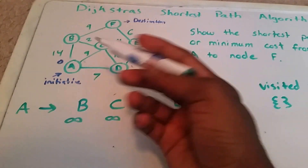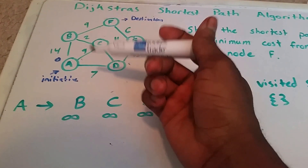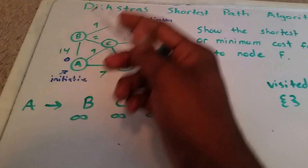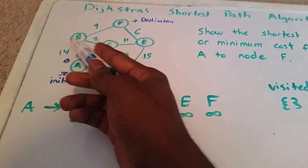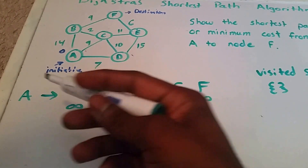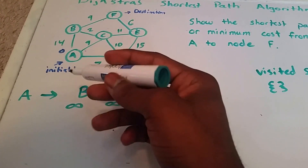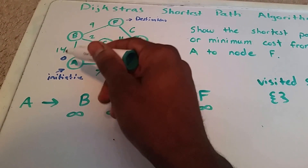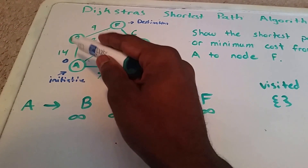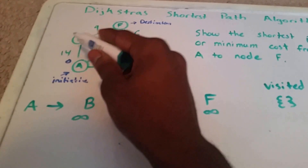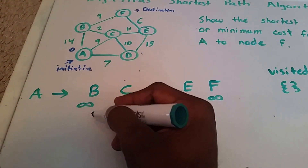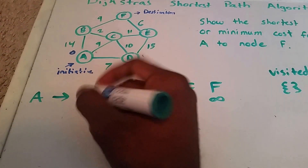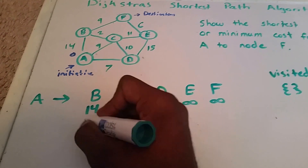Now we're going to look at our neighboring nodes. Since our current node is A, which is our initiative node, the neighboring nodes are B, C, and D. We want to see if we can find a lower tentative value. The tentative value to get from A to B is zero plus 14, and 14 is an improvement over infinity, so we put 14 here, coming from node A.